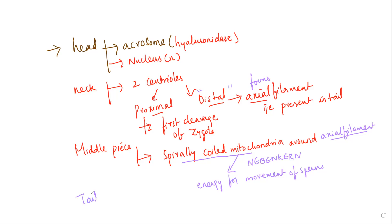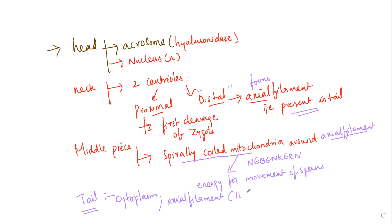Next we have the tail — a very long, slender tail. It is made up of cytoplasm, and as mentioned, the axial filaments are present in the tail. These axial filaments are made up of proteinaceous microtubules and they are arranged in a nine plus two manner.